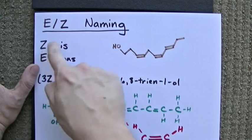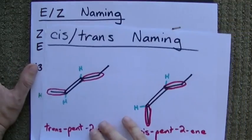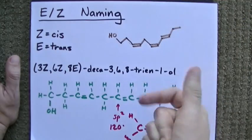Long story short, Z means cis, E means trans, and as long as you remember that and you have some clue what cis and trans mean, you should be fine. Best of luck.